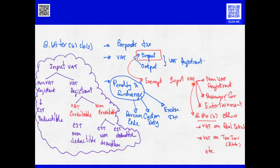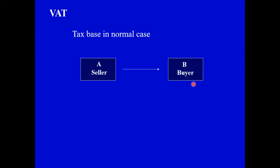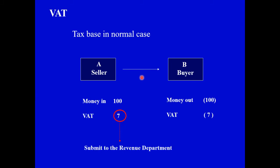We come to this part for the mechanism of the normal VAT case. In the taxation class for VAT, normally in a transaction involving a VAT product or VAT service, A who is the seller will become the VAT registrant, and B who is the buyer — if they are not exempt — must also be a VAT registrant. When both are VAT registrants, the total tax base is 100 baht; the VAT will be collected as output tax by A and as input tax by B. This output tax under Section 65 bis is not treated as income of A.